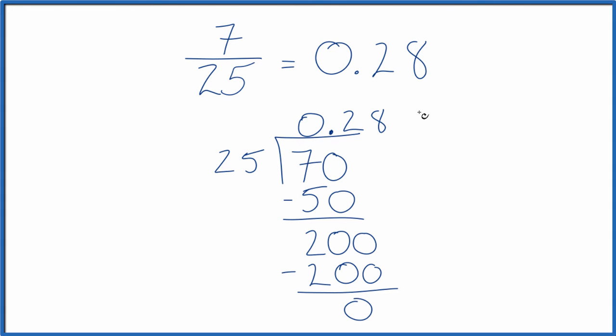So we get the same answer. 7 divided by 25 gives us the decimal 0.28, which is what we got up here. So the fraction 7/25 equals the decimal 0.28.